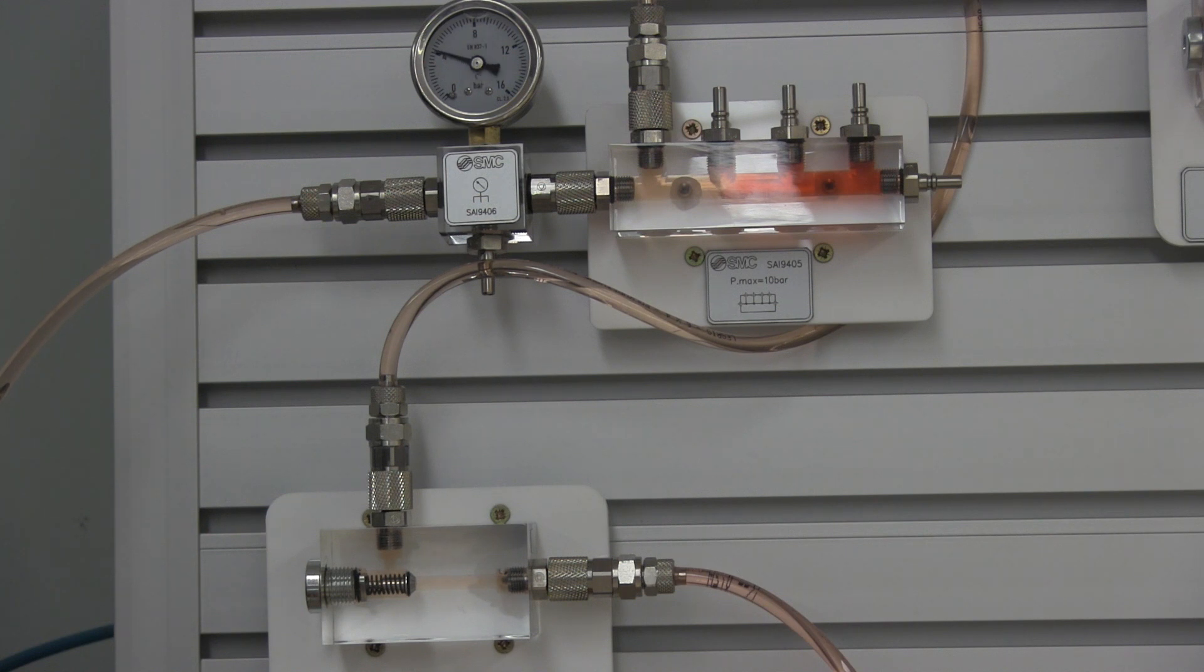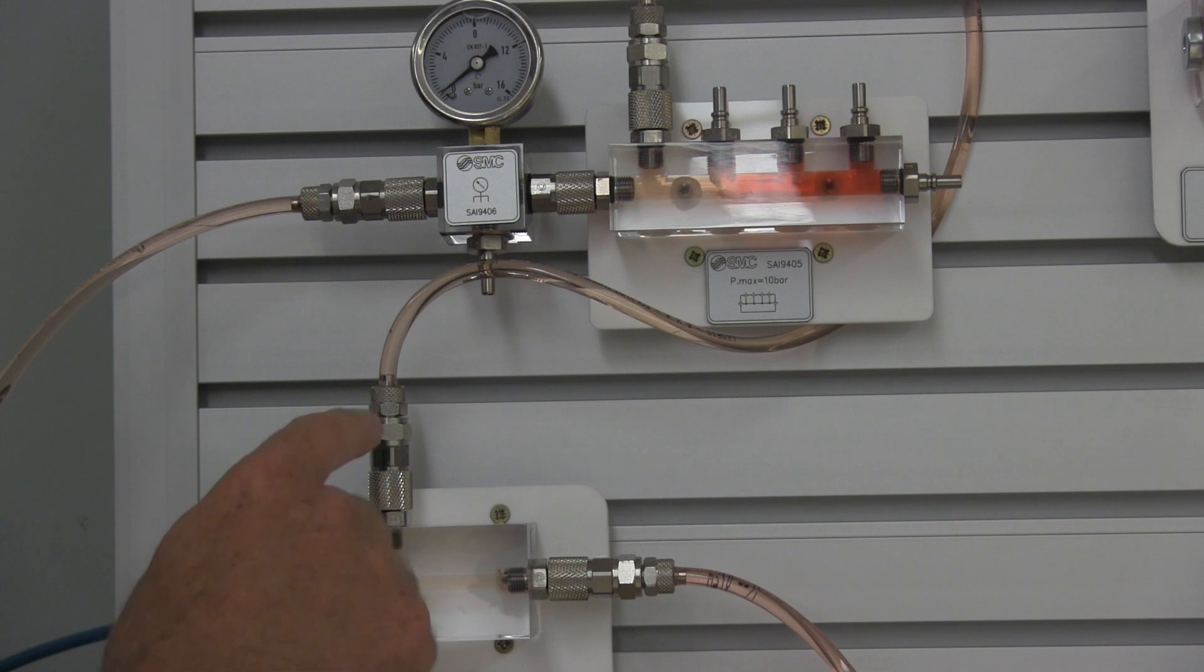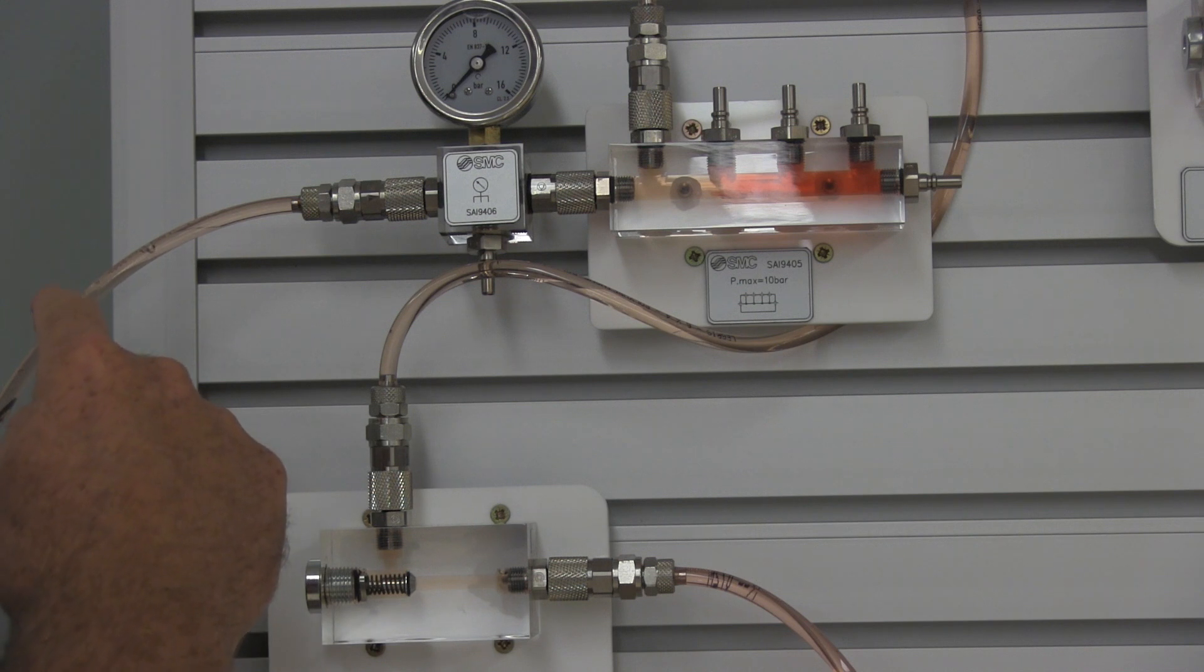When you're going from the A port to the B port, oil is allowed to flow and there's a minimal amount of pressure. But when you switch that, oil will not flow from B to A in this circuit.